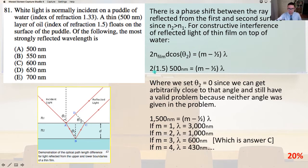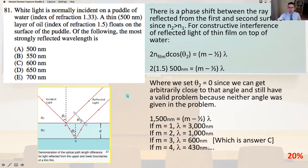Plugging in our numbers: 2 times 1.5 times 500 nanometers equals the quantity m minus 1.5 times lambda. We set theta 2 equal to 0 since we can get arbitrarily close to that angle and still have a valid problem, because neither angle was given. So 1,500 nanometers equals the quantity m minus 1.5 times lambda.